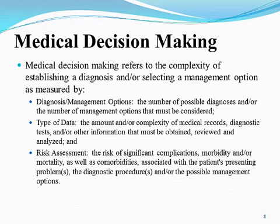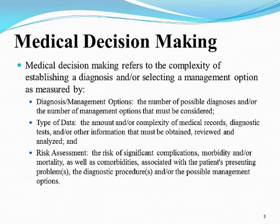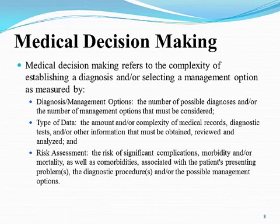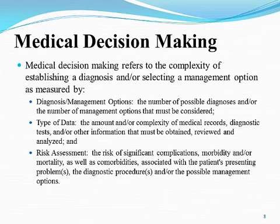There are three areas of the medical decision-making component: diagnosis management options, which is anything being addressed or managed during the encounter; type of data, which includes anything reviewed or ordered such as diagnostic and laboratory tests; and the risk assessment, which is the risk involved with that patient from one encounter to the next. CMS has developed a chart called the table of risk to provide guidance. Medical decision-making correlates with the A&P portion of a SOAP note — your assessment and plan.